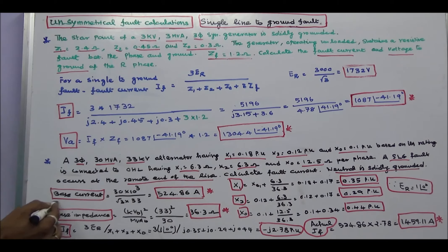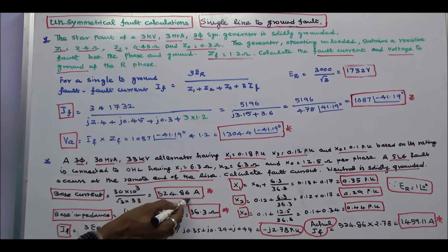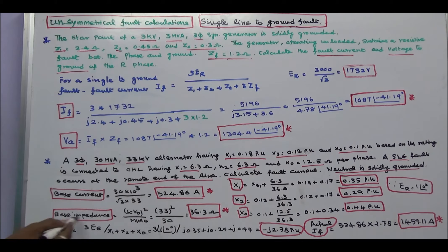First step, how to calculate the base current. Base current is equal to 30 into 10 power 3 divided by root 3 into 33. Base current is 524.86 amps. Base impedance is equal to KV base square divided by MVA base. 33 square divided by 30. That is equal to 36.3 ohms.